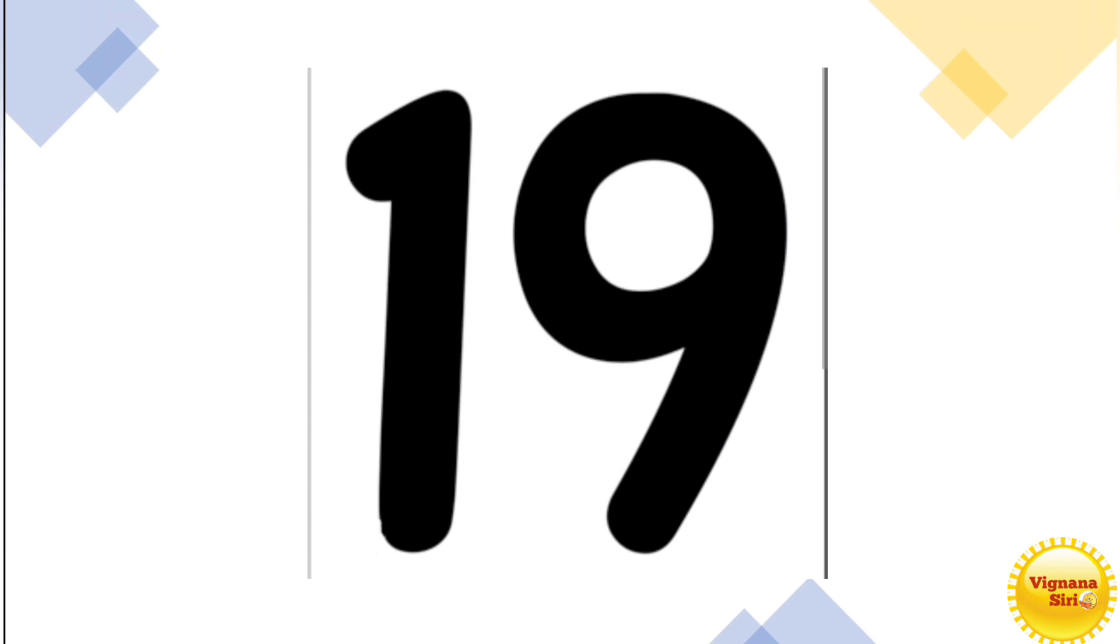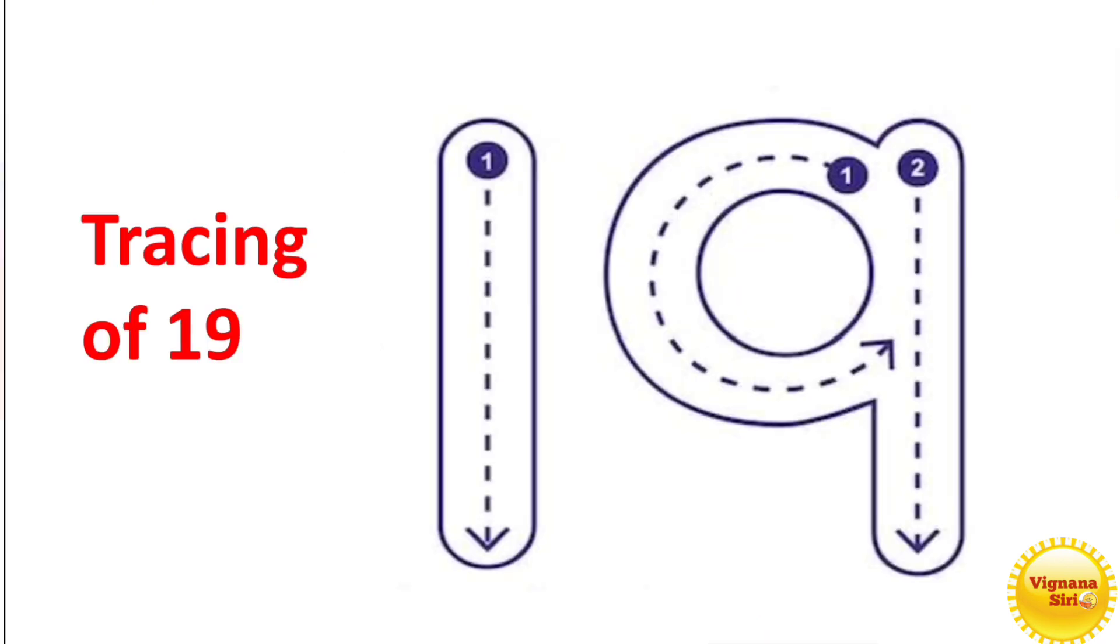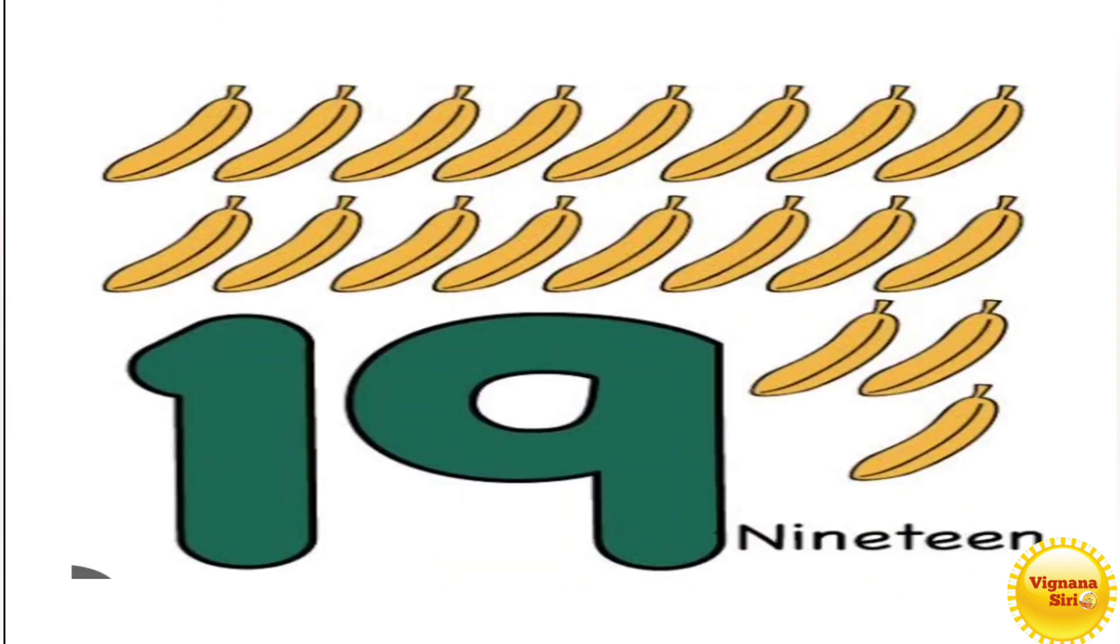Hello kids, so today we are learning the number 19. So how we have to write the number 19? As Siri said, you already know number 1 and also number 9. So after 1, if you write the number 9, it is the number 19. So the name itself 19. So these are so many bananas are there. We have to count them. So we will see all the tracing, counting now.